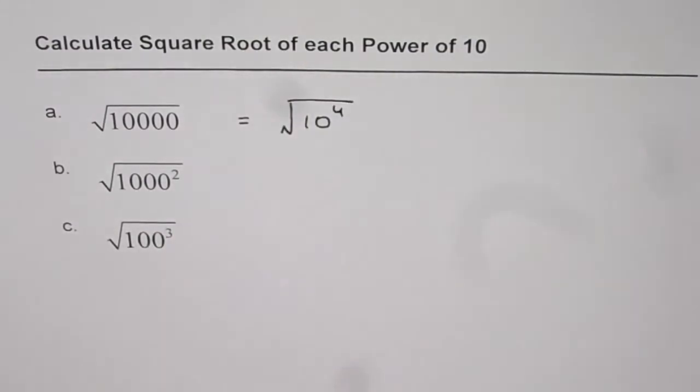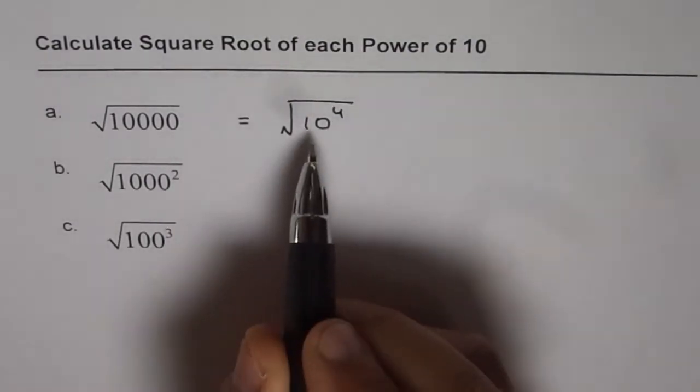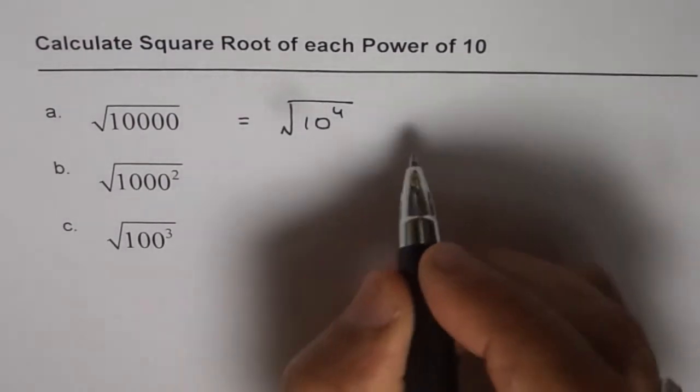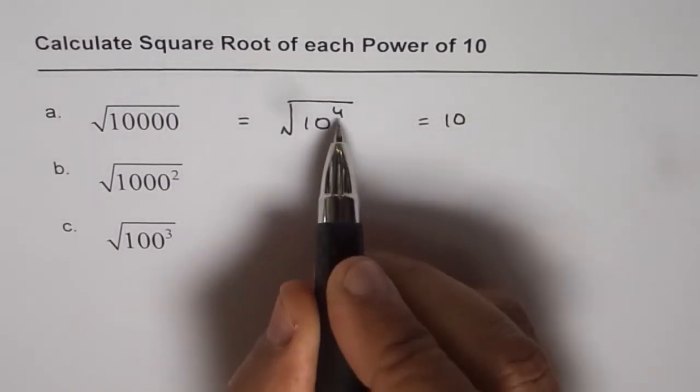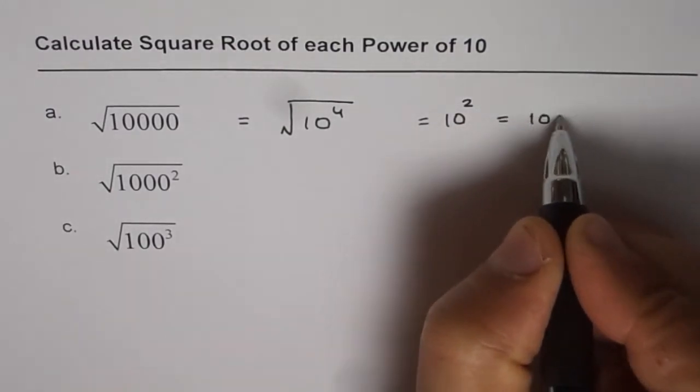Square root basically is half of that power, correct? So it becomes 10 to the power of half of 4 is 2. That is to say, it is 100.